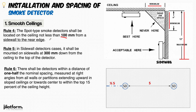Rule number four: the spot-type detector shall be located on the ceiling not less than 10 centimeters or 100 mm from the side wall to the nearest edge. Please see the illustration — the smoke detector shall be kept a minimum of 100 mm from the wall. We want to avoid installing the smoke detector in the corner. If you need to install it on the side wall, you must go down a maximum of 300 mm.